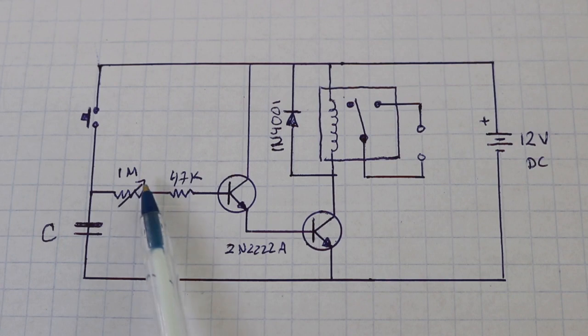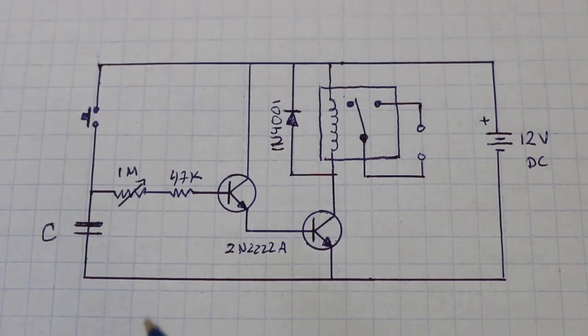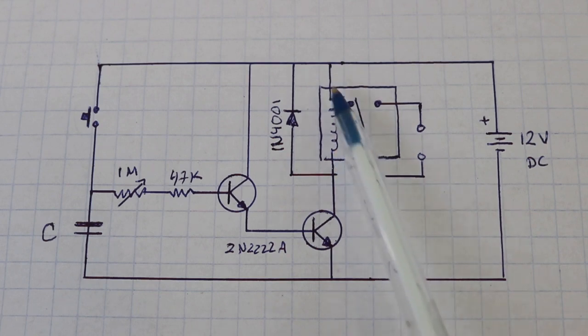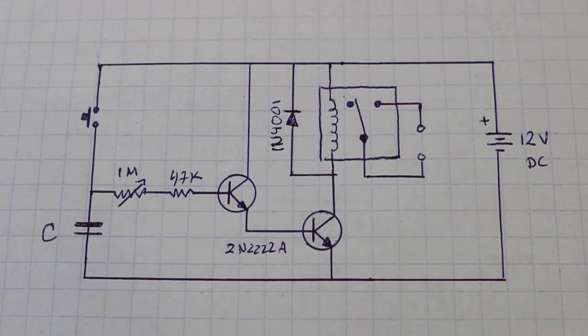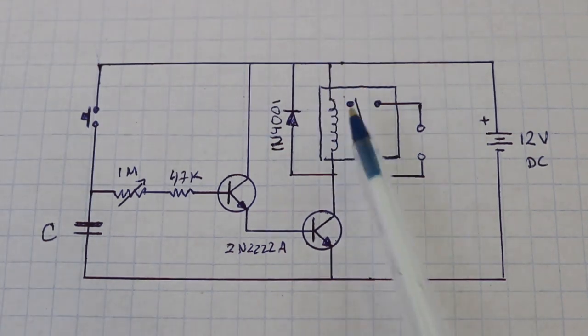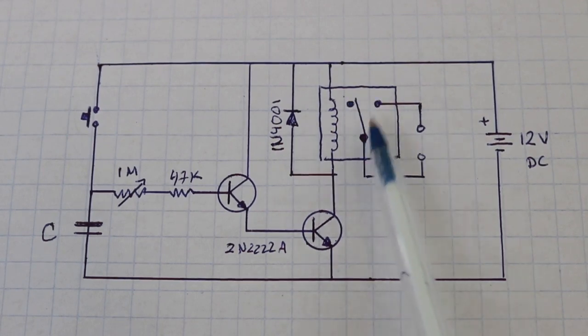Then the current can flow through the base of this transistor and in turn the current now flows through this pad and hits the base of the second transistor. This transistor turns on and activates the coil of the relay. And with the relay activated, these two points are now in contact.